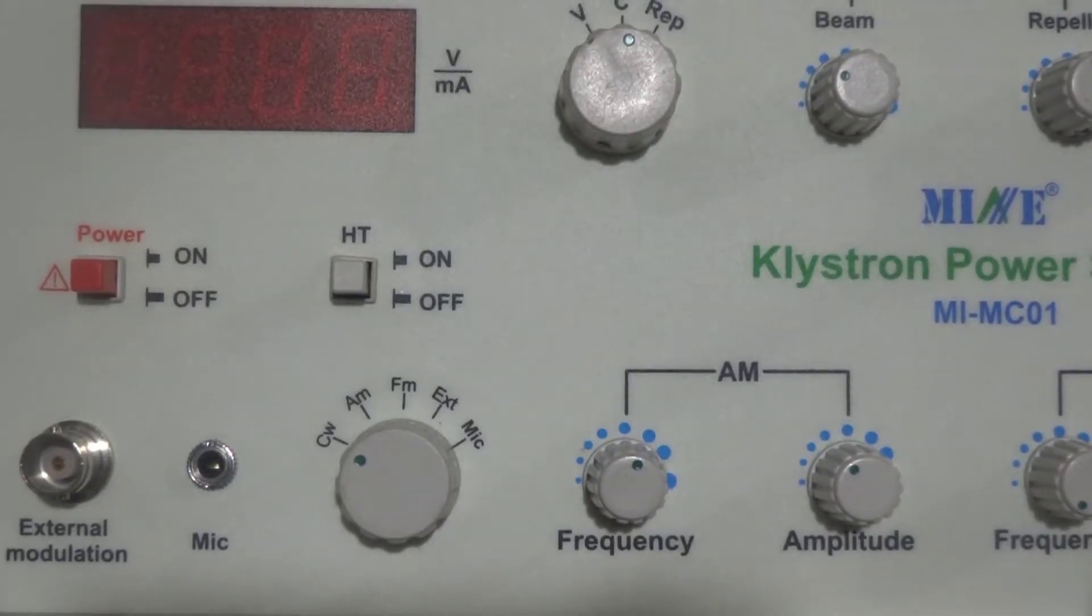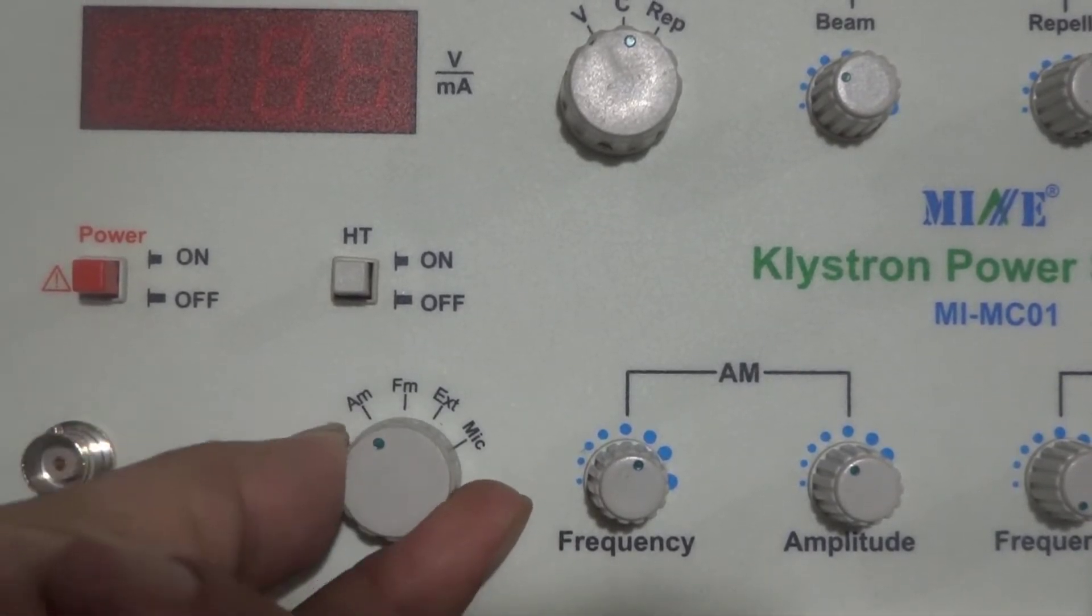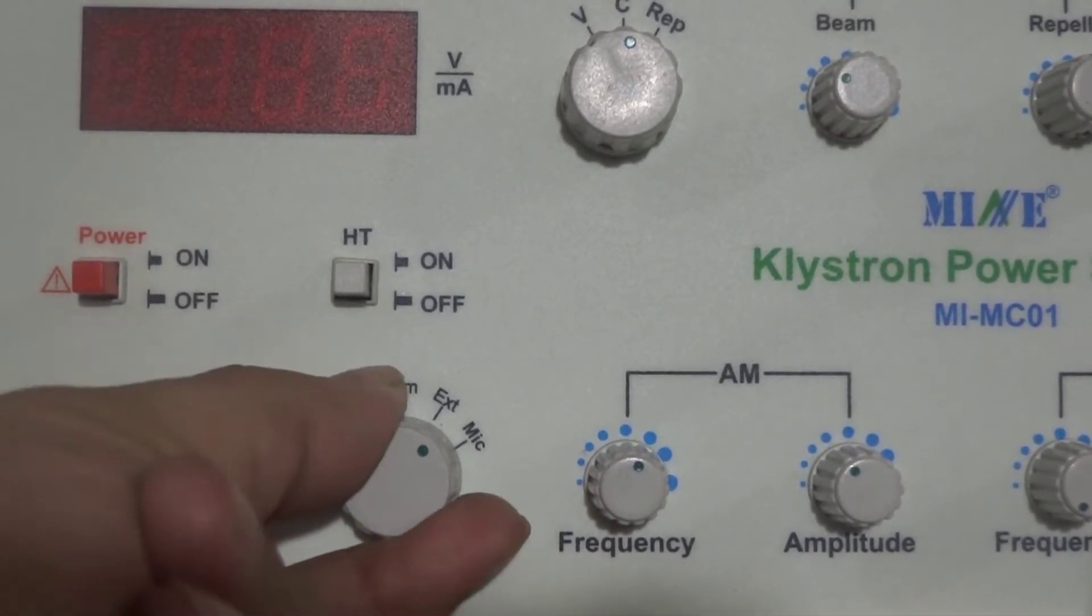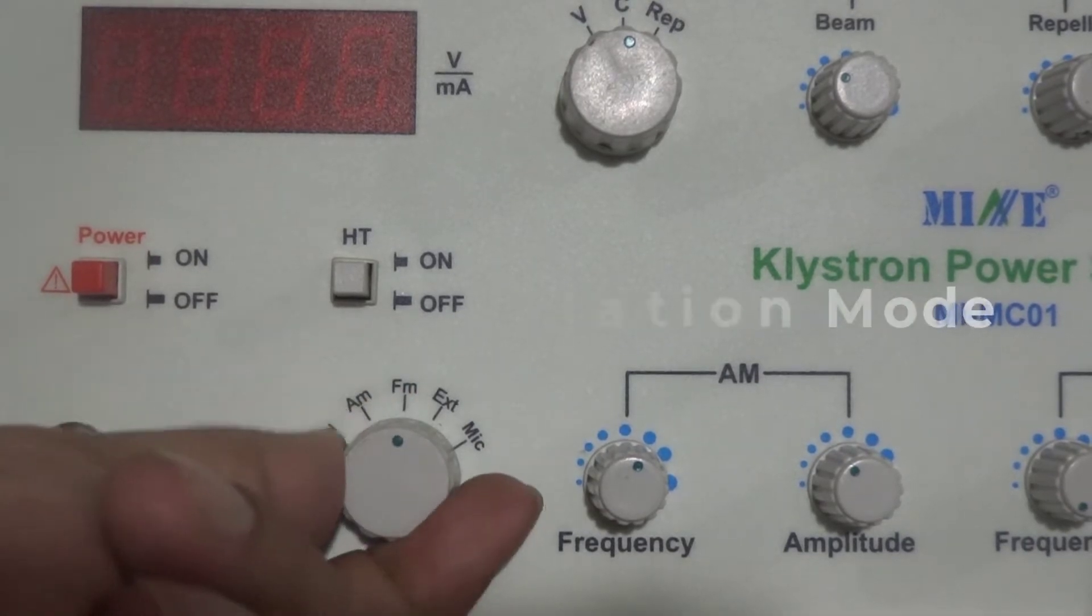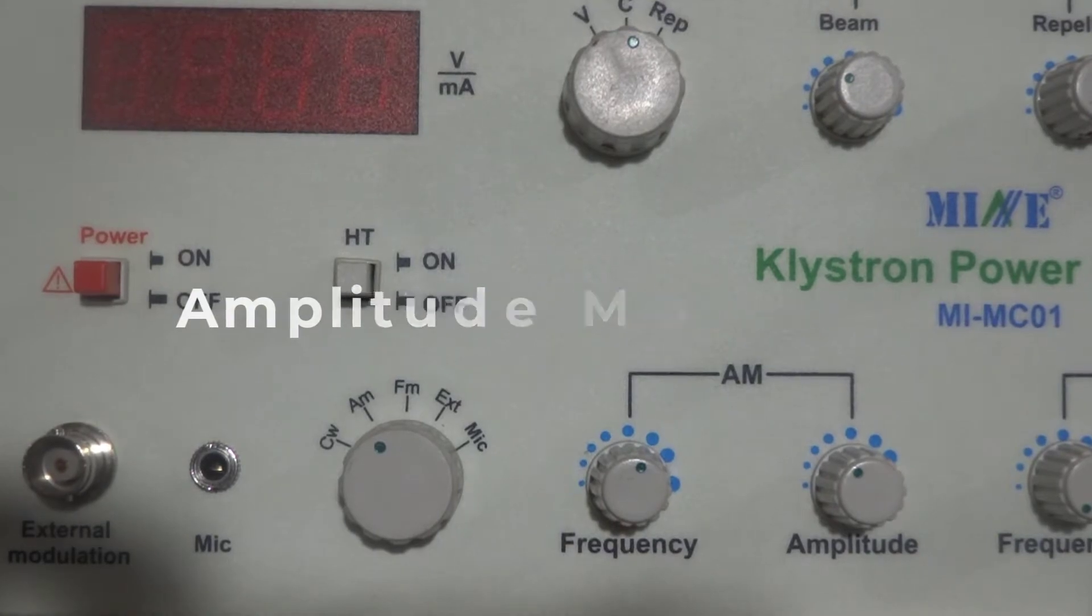The klystron power supply having different types of modes such as continuous wave, AM, FM, external and mic mode. For the experiment, we will go for AM that means amplitude modulation mode.